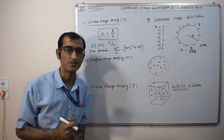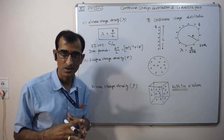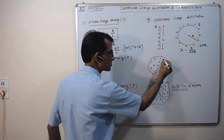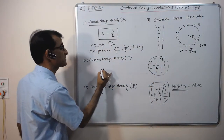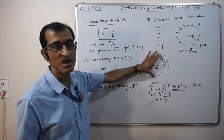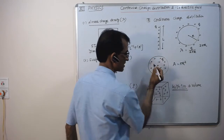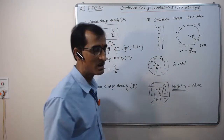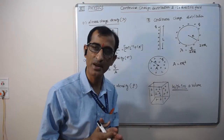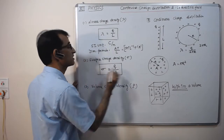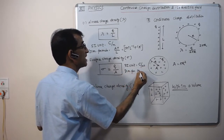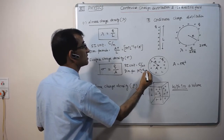Number two: surface charge density. Surface charge density means the total amount of charge divided by the total area. If total charge is Q and total area is A, then surface charge density sigma equals Q divided by A. Its SI unit is coulombs per meter squared (C/m²), and its dimensional formula is M⁰ L⁻² T¹ A¹.